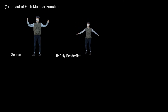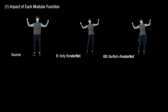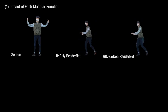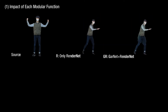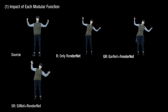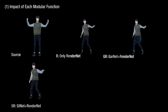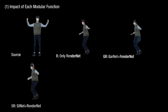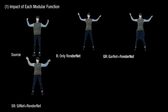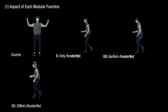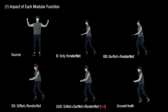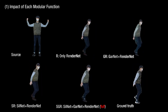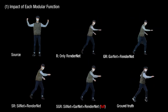R uses only the render network to generate the person image from the body pose. GR is composed of GarNet and RenderNet, which predict the garment labels and person image consecutively. SR generates the person image without garment label prediction. The full model GR generates the silhouette, garment labels, and person image consecutively, and shows the best performance.